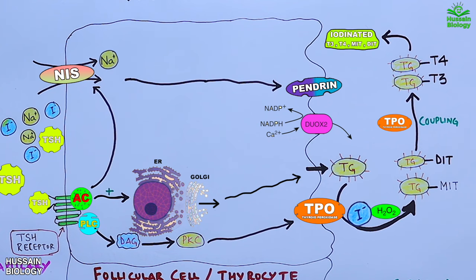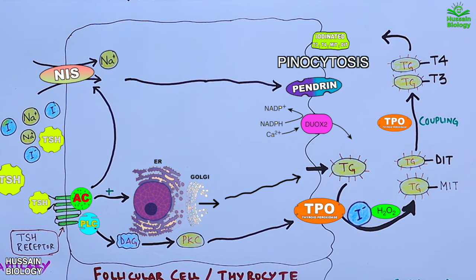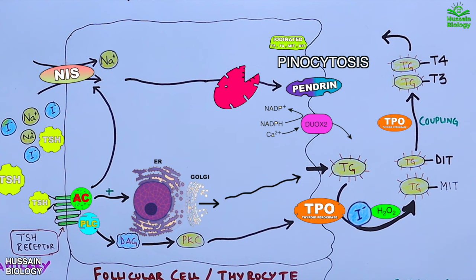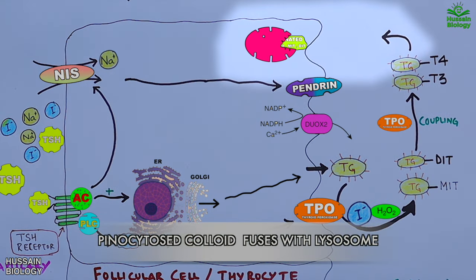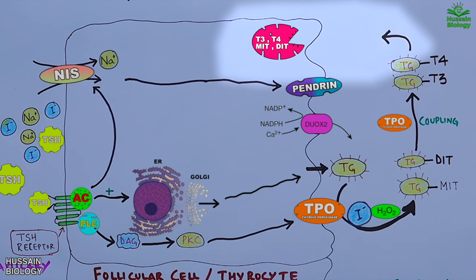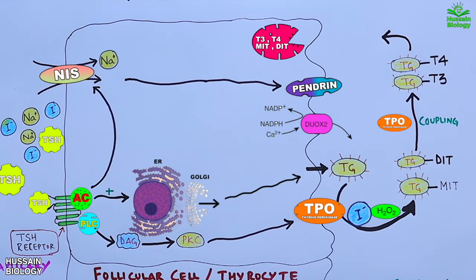This iodinated thyroglobulin molecule is stored within the colloid as part of the TG molecule. In the next step, thyroglobulin colloid is taken up by the follicular cell via pinocytosis. This colloid vesicle then fuses with lysosomes, generating a phagolysosome.